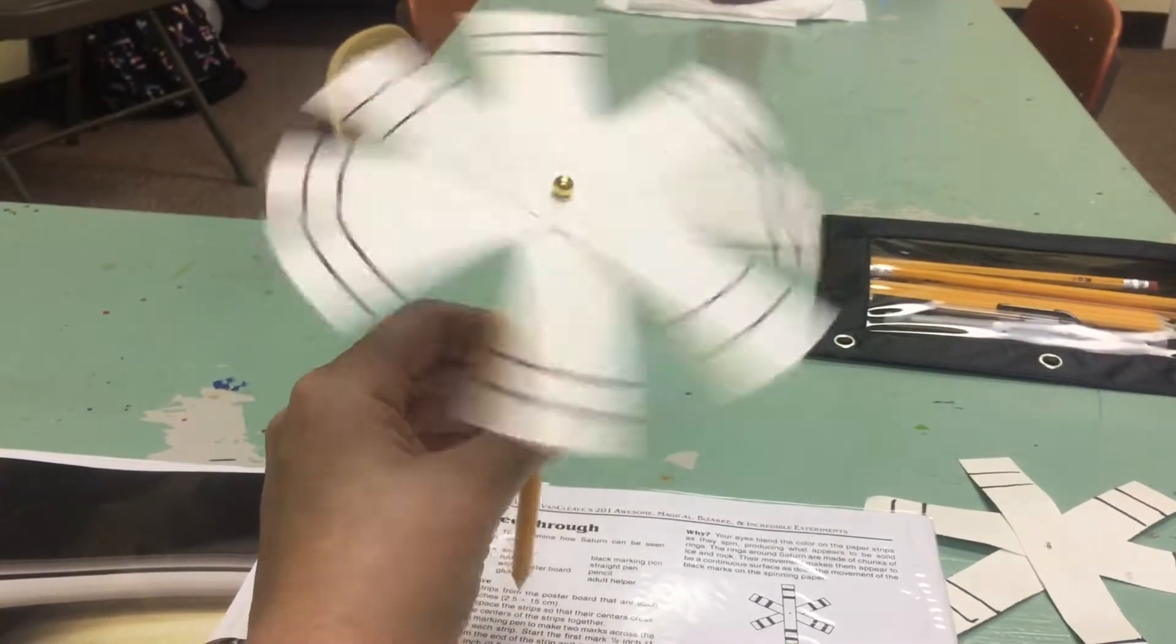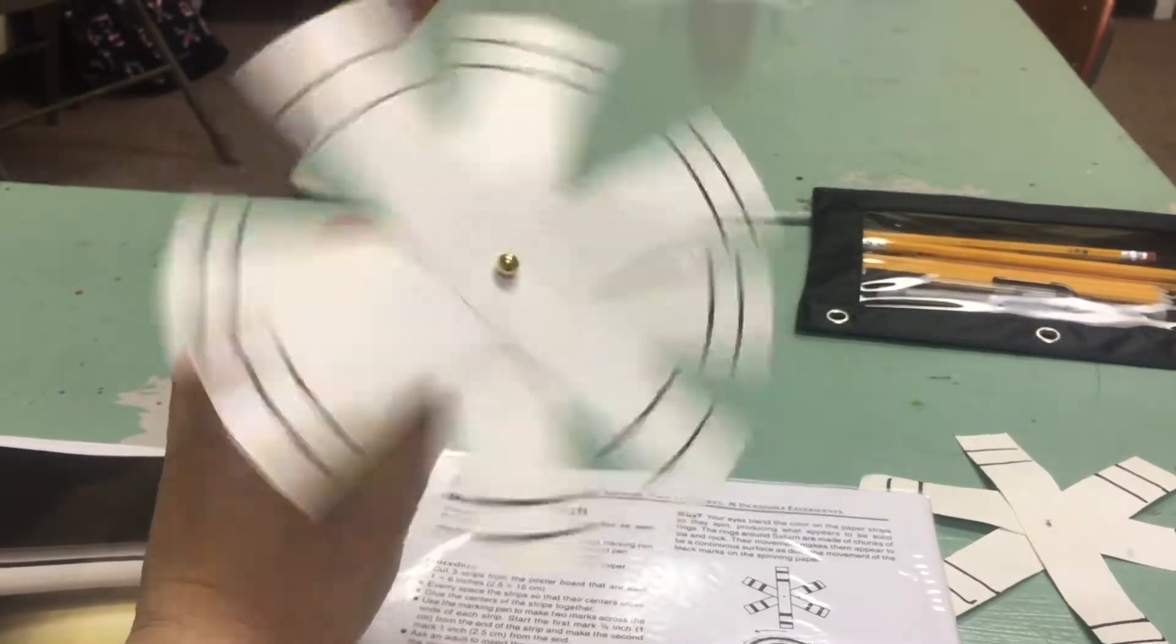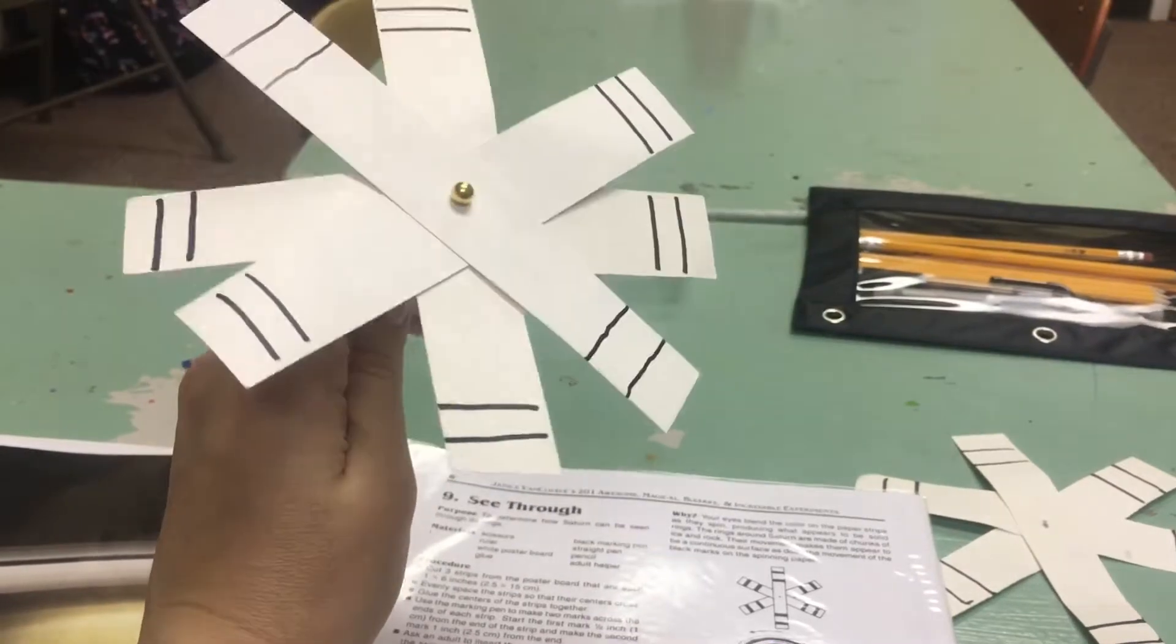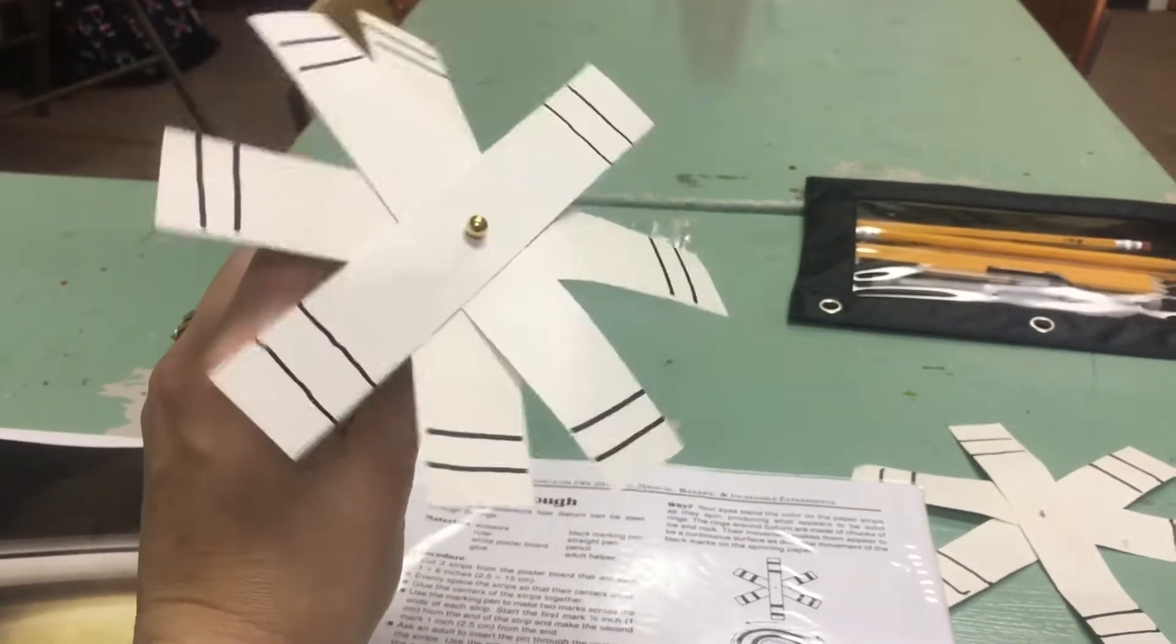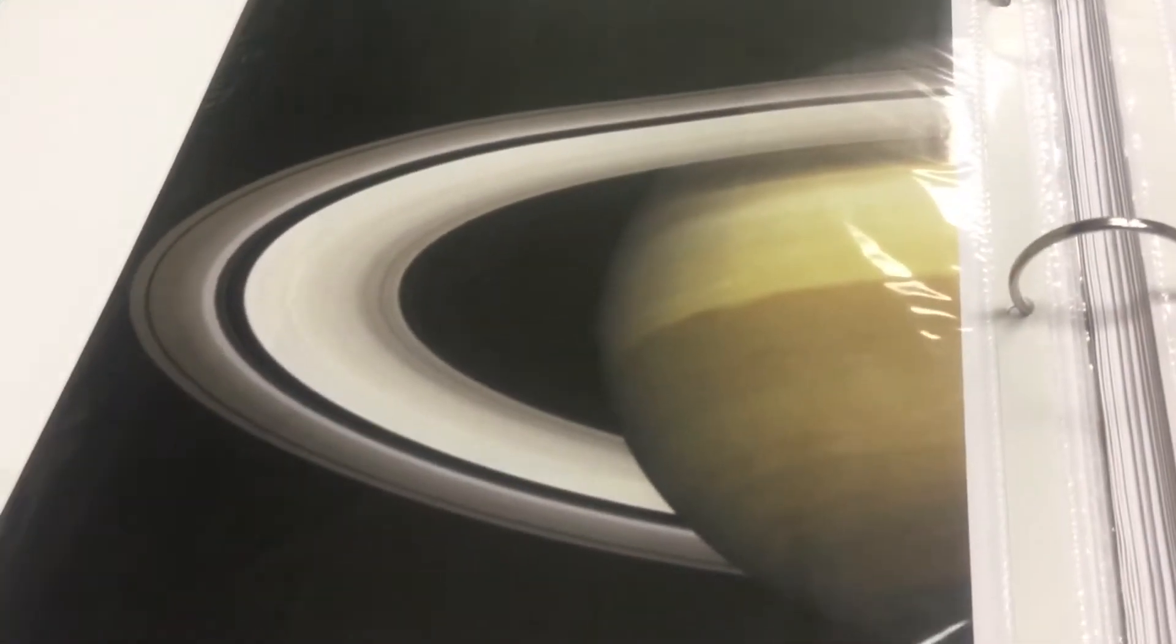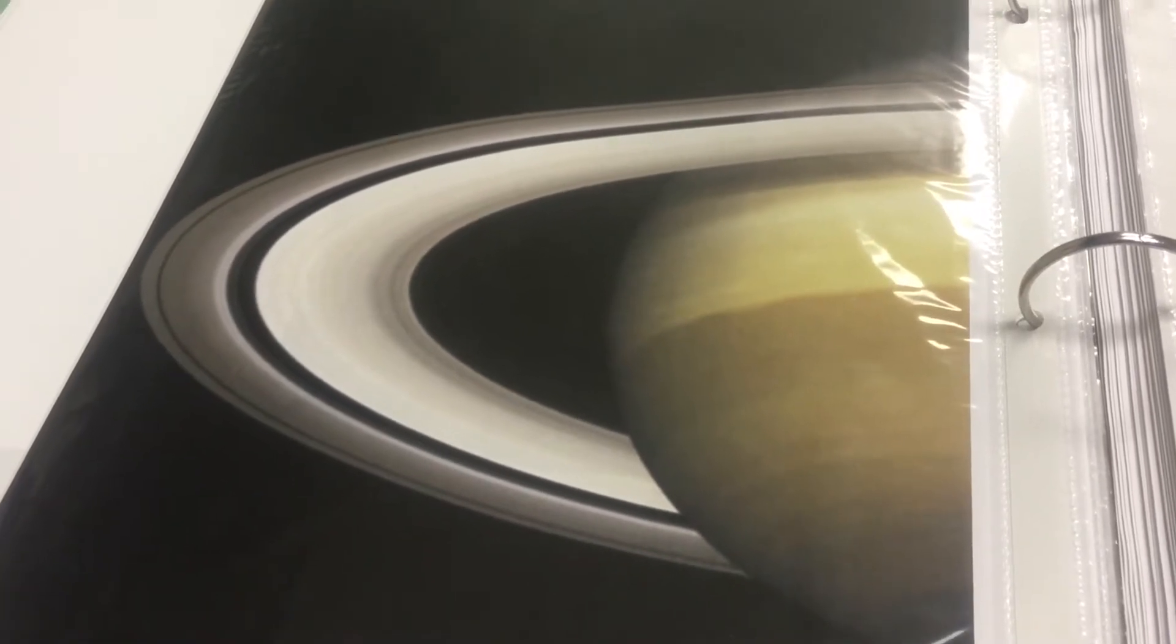And then as we begin to spin it, you can see that it looks like a solid ring around Saturn. The faster you spin it, the more solid it will look, and that gives us our view of Saturn. We can still see Saturn through the rings.